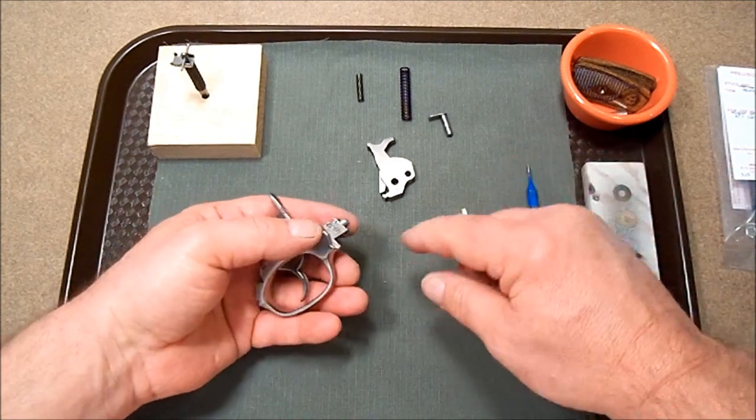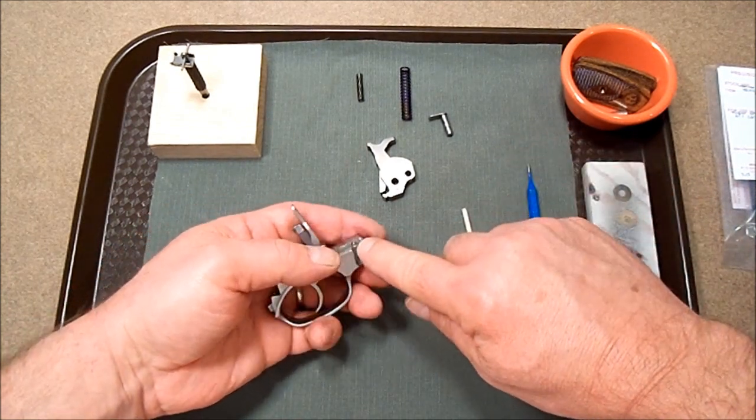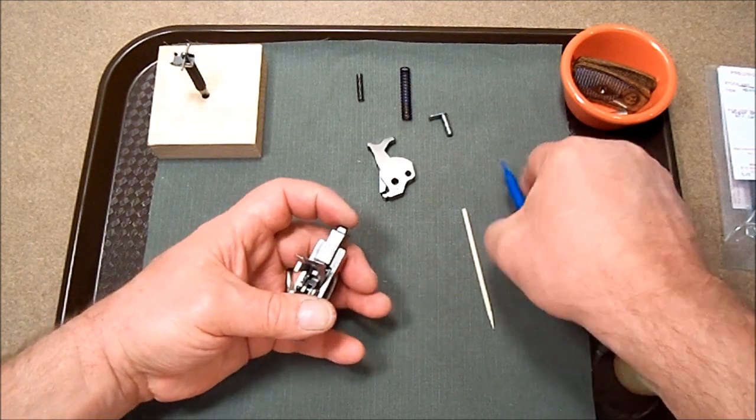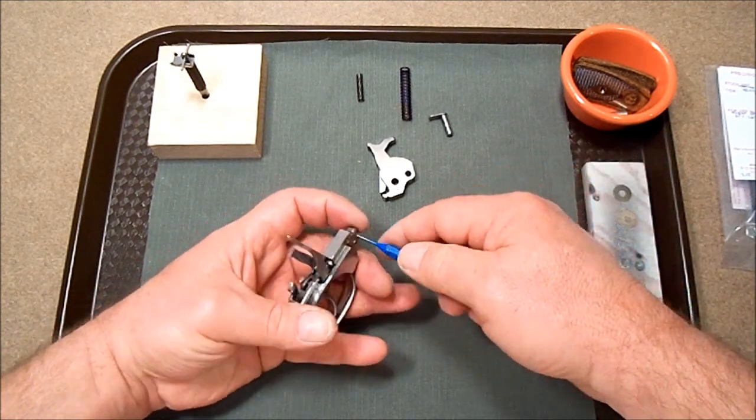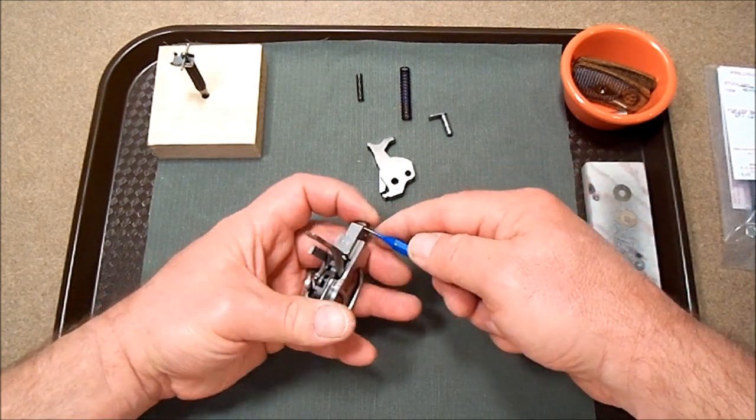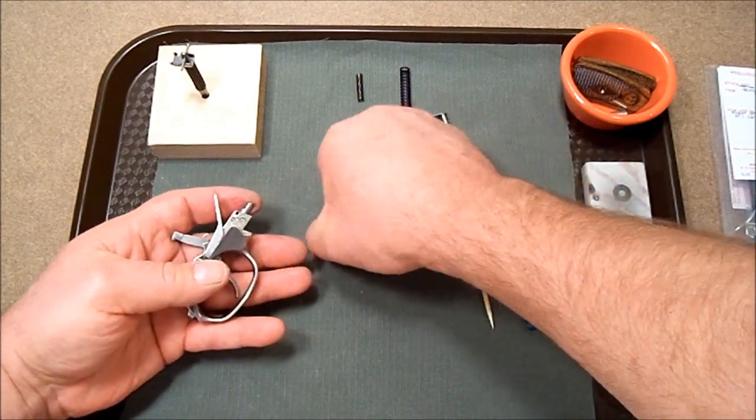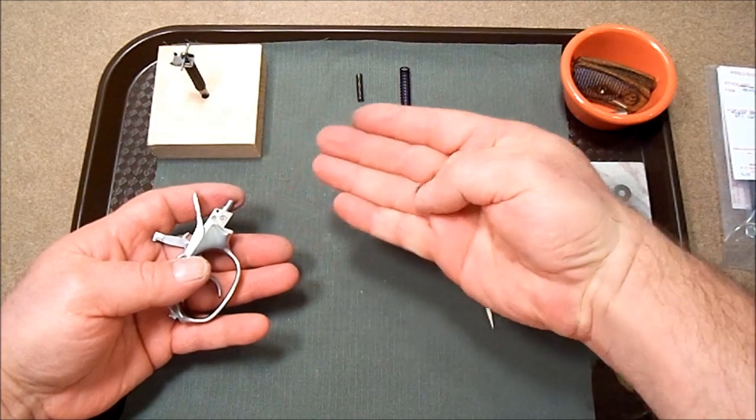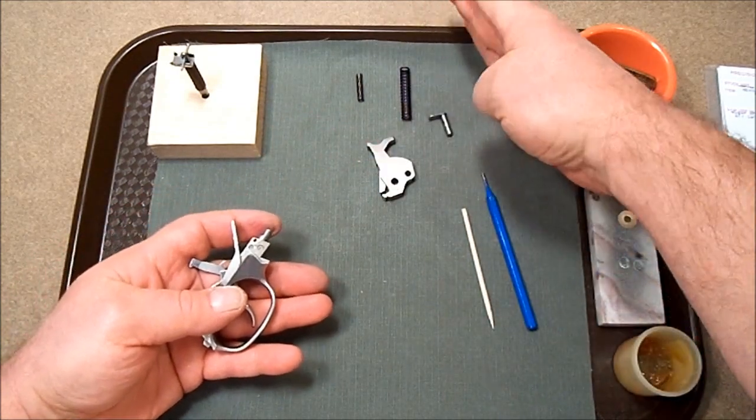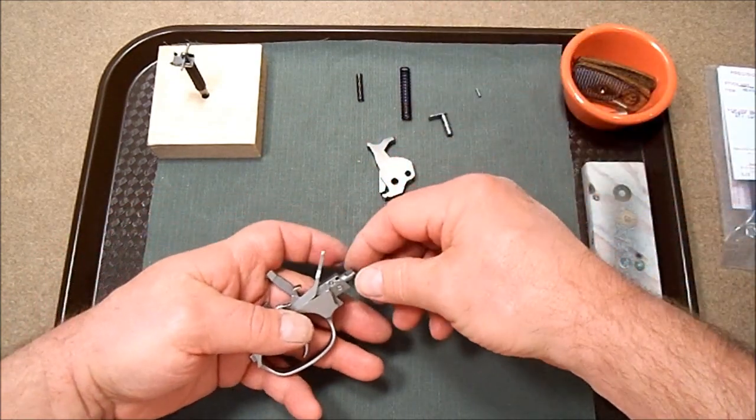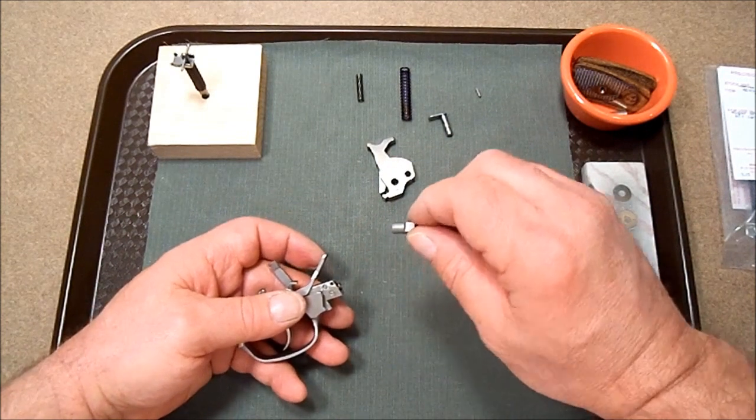Next, we're going to take the guard latch pin out. We'll depress the guard latch. And with a small punch, push the latch pin out. Set that aside.